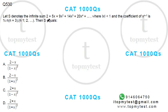Let s denote the infinite series 2 plus 5x plus 9x squared plus 14x cubed plus 20x to the power 4, so on, where modulus of x is less than 1. So, each term is smaller than the previous one, algebraically. So, it will keep on reducing. So, that's why you have an infinite progression.